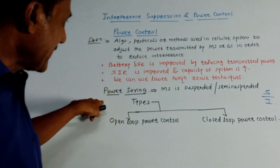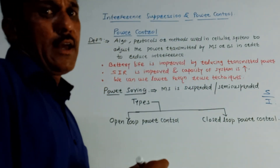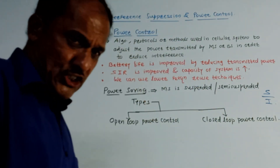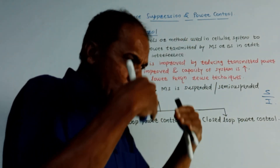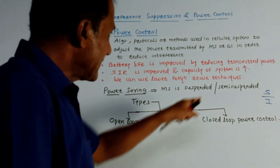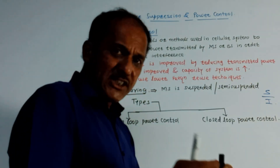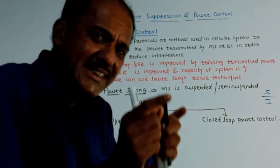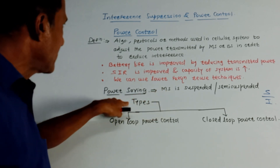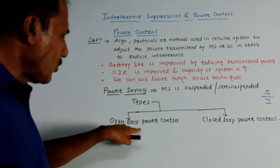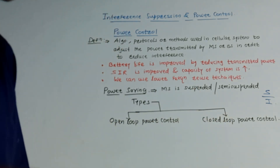Power saving means we save the power, especially of the mobile station. Whenever not required, the mobile station is suspended, or in normal operations it is semi-suspended, meaning it has limited capability to save power. There are two major techniques: one is open loop power control and the second is closed loop power control.